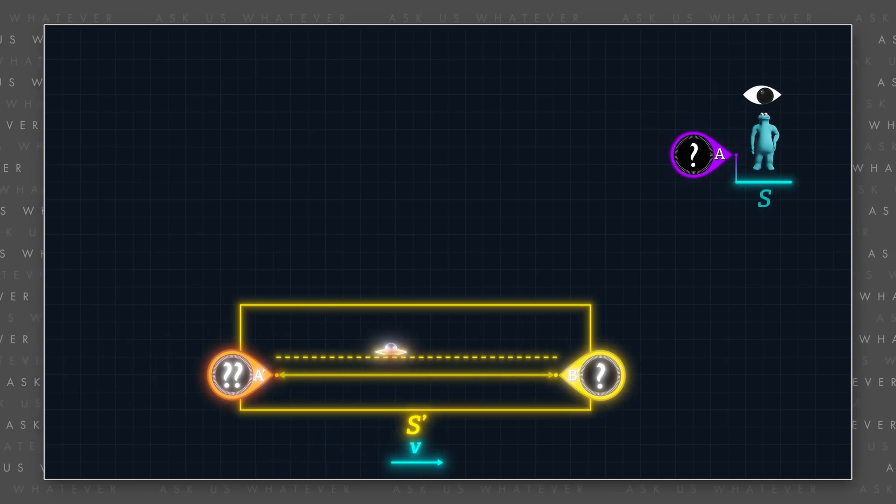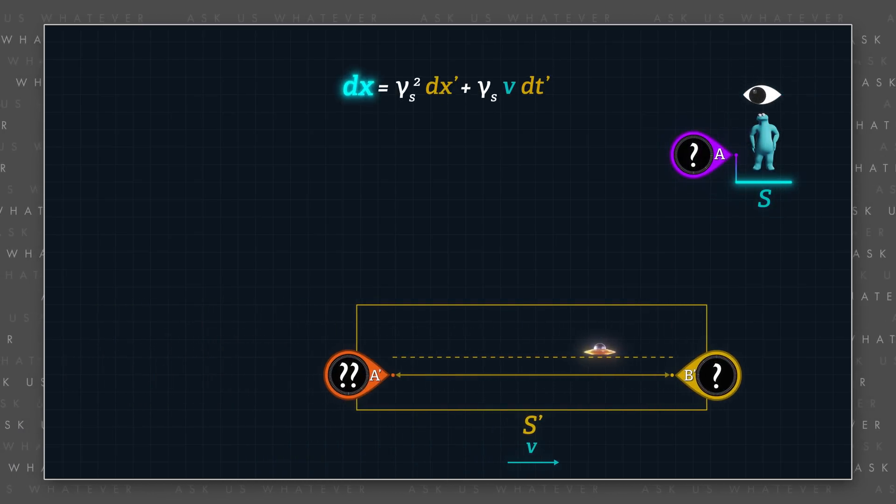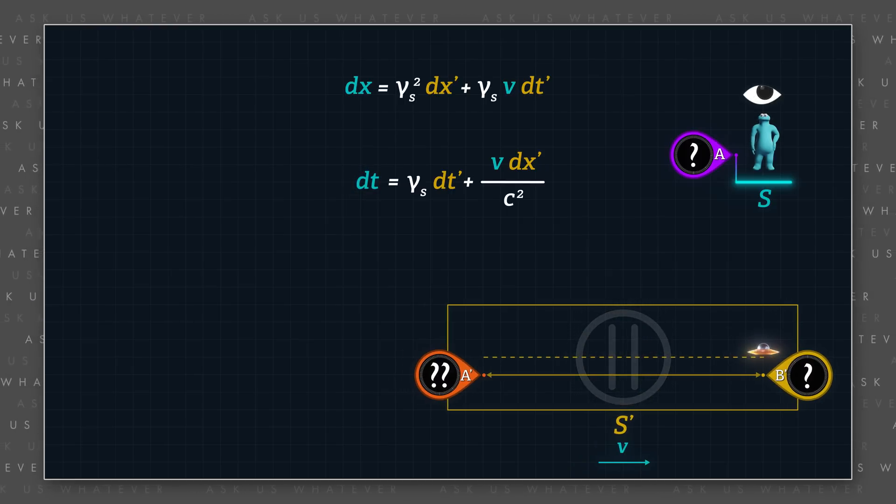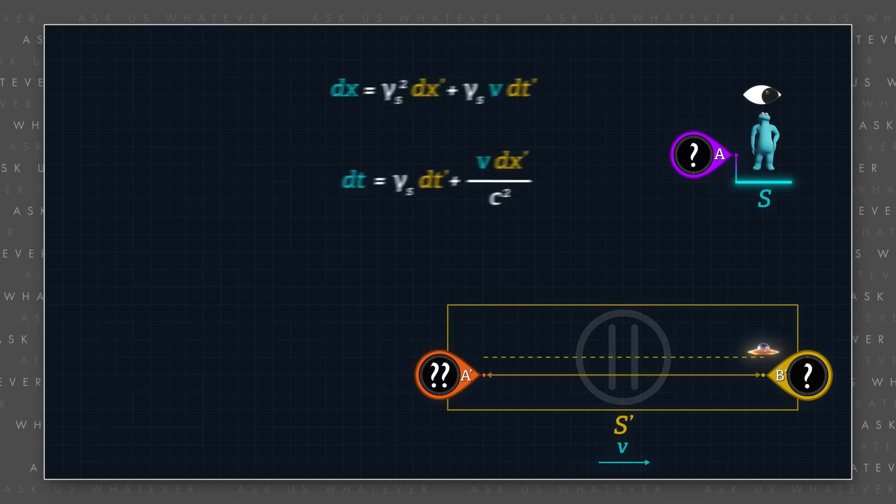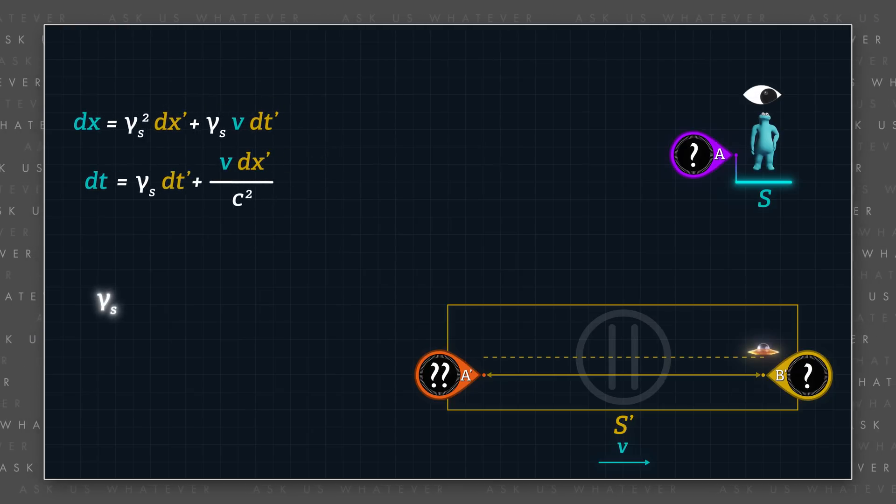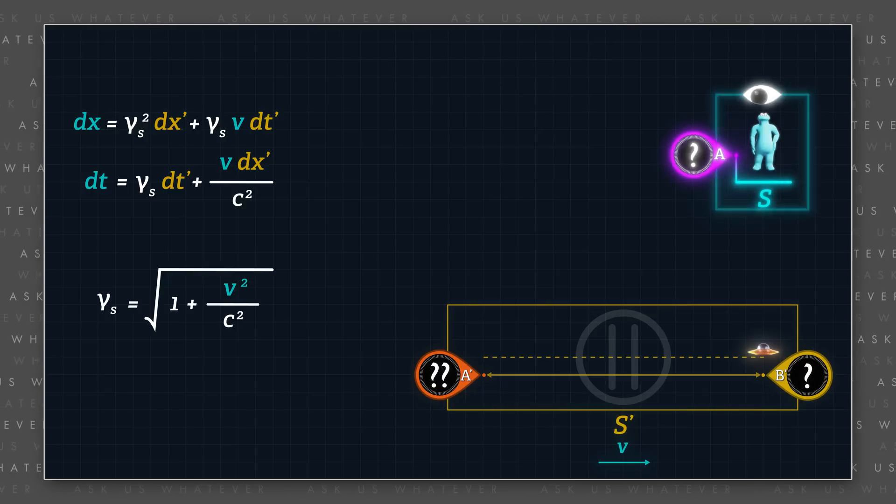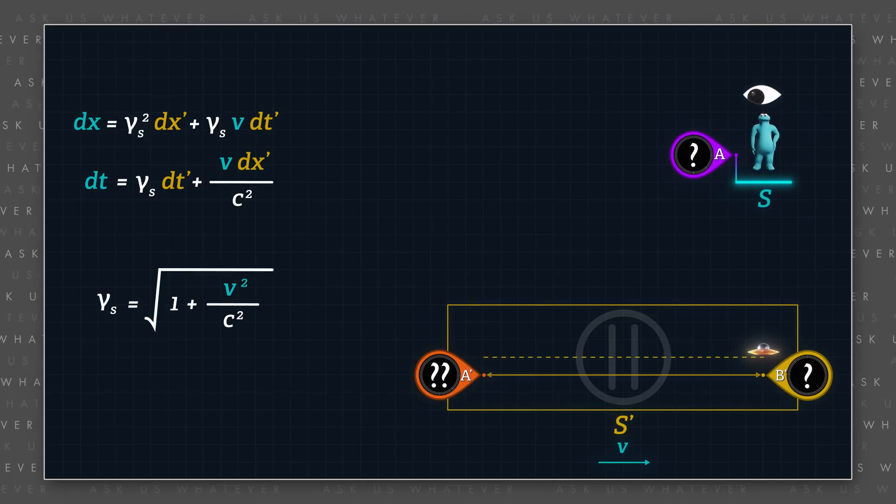We'll first start with two reference frames using the alternative dx and dt transformations that you've seen in earlier episodes, and then we'll expand the analysis to multiple reference frames. Gamma s is computed using the speed v of a given moving frame relative to our preferred reference frame s, as measured in frame s meters per second.